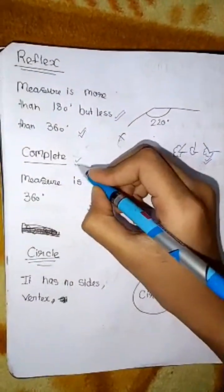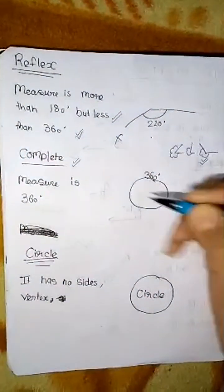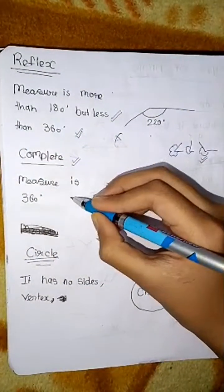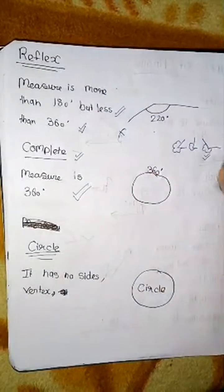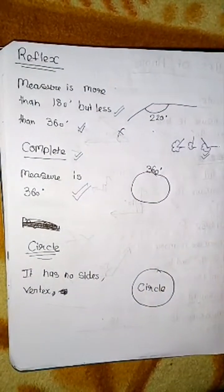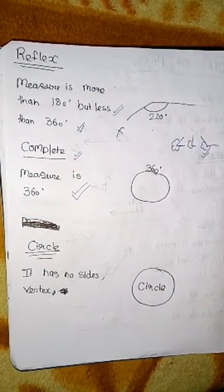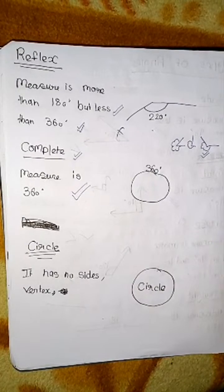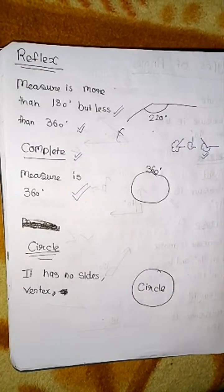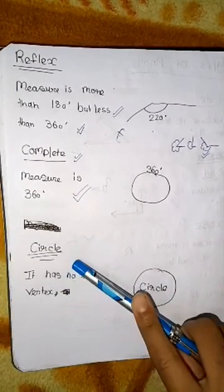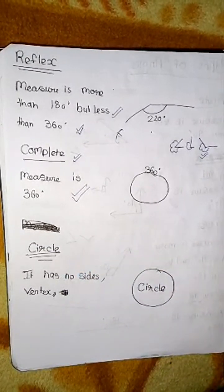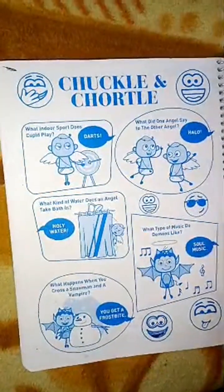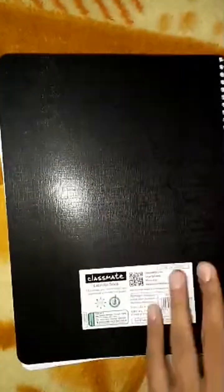What is a complete angle? Its measure is exactly 360 degrees — a complete circle. Next we will be learning about circles, but before that I will have a quiz for types of angles and what are angles.